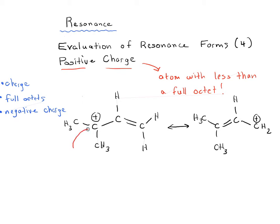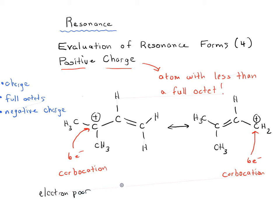Looking at these two resonance forms, in one case we've got a carbon with only six electrons — this is called a carbocation. The other carbon also has only six electrons, so it's also a carbocation. Carbocations are electron-poor, and the more electron-poor they are, the more unstable they are. They are stabilized by electron-rich neighbors — if you're poor, it helps to have rich neighbors.